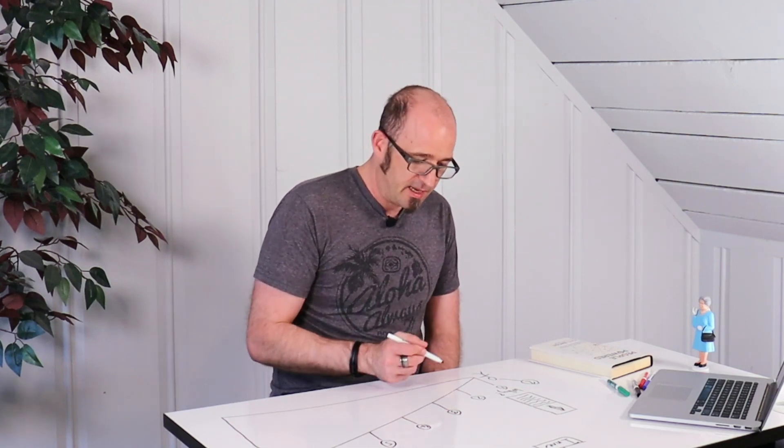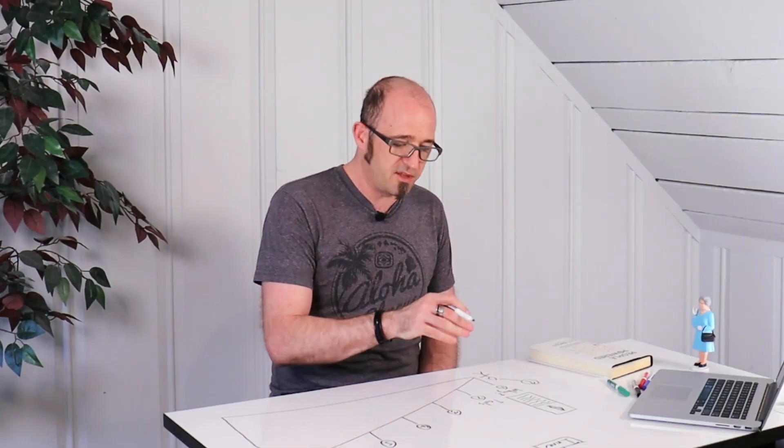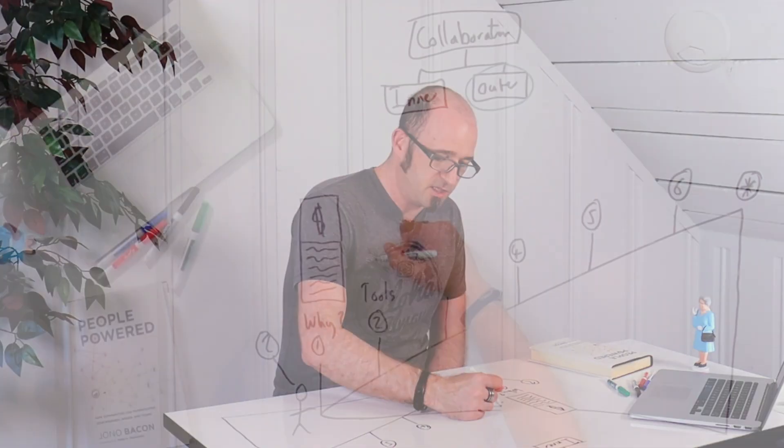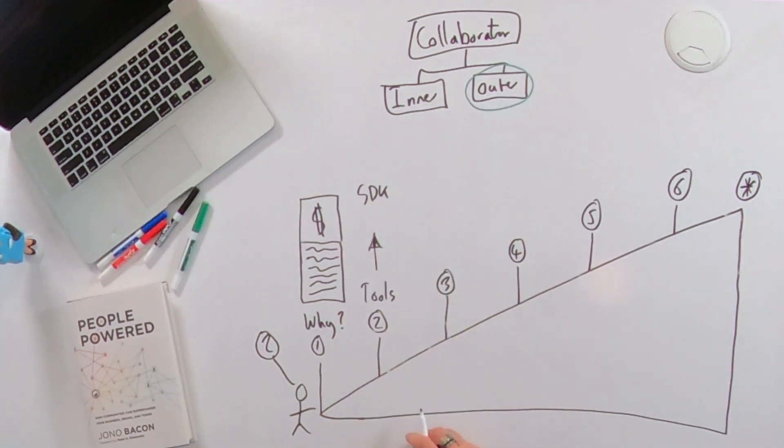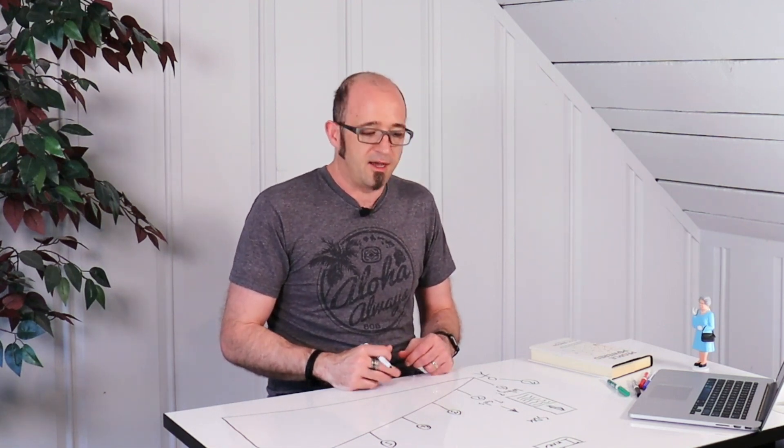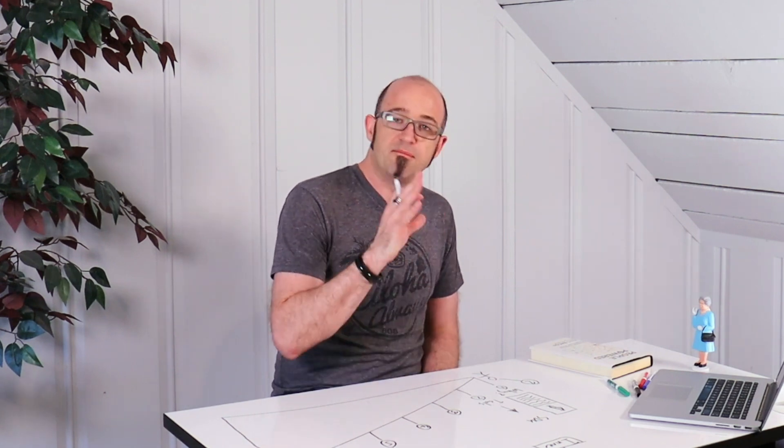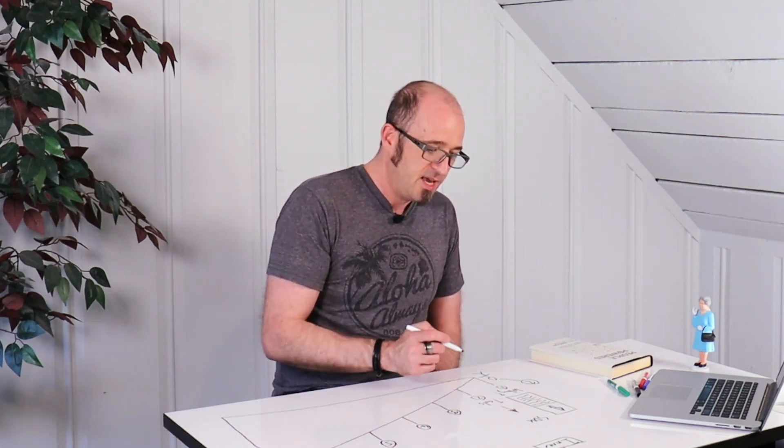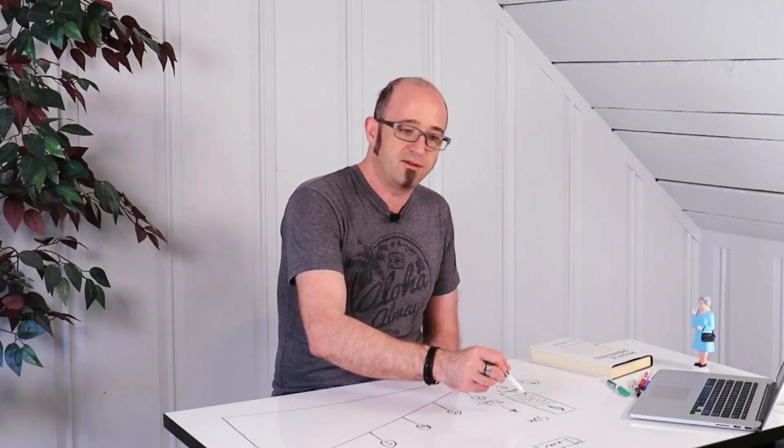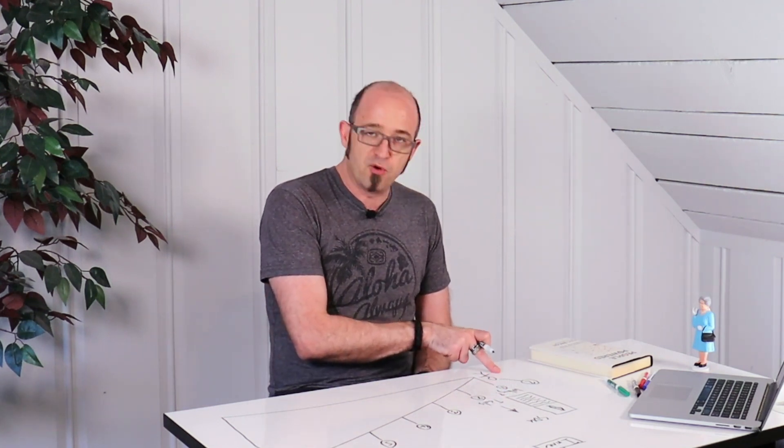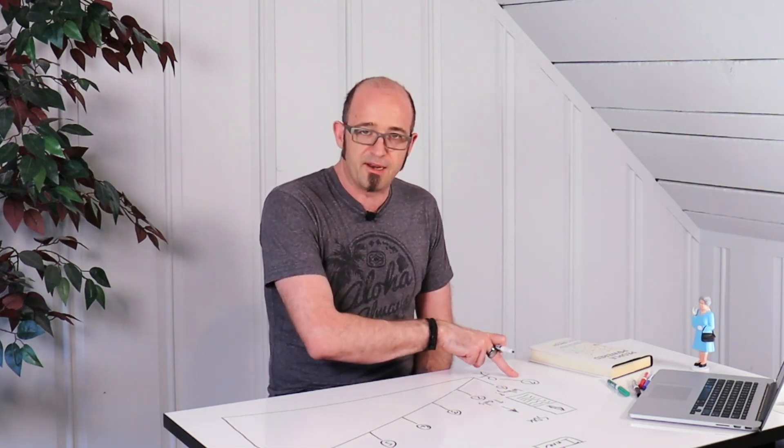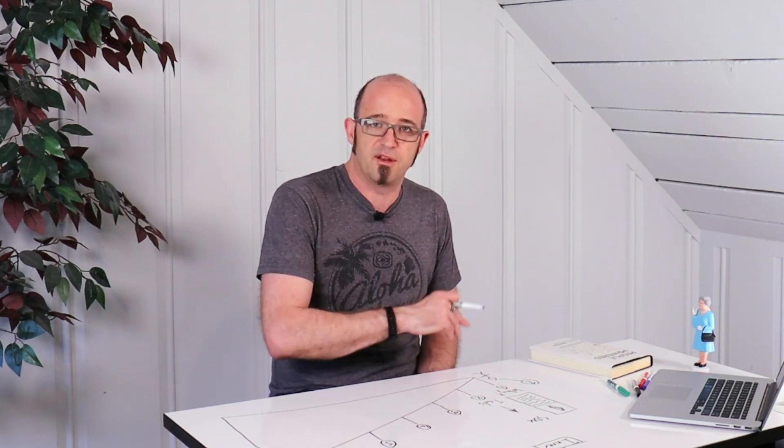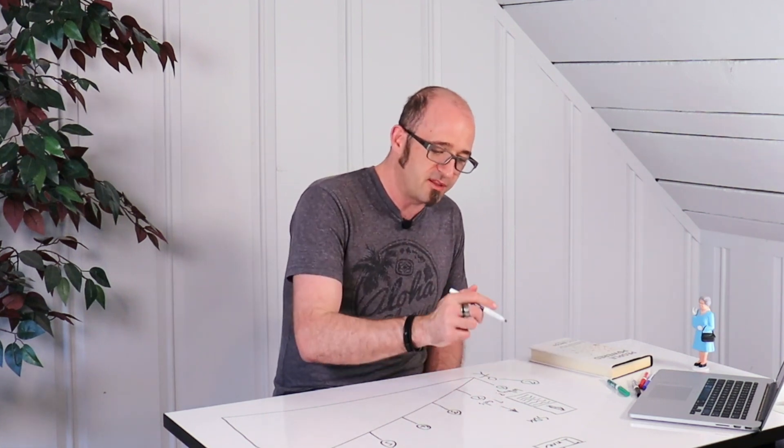Step two in the process is the tools. So what are the tools this developer is going to need to set up to get up and running? And most typically for an outer collaborative community like this, it's going to be an SDK. So this is going to be the core software development kit that they download and they've got full access to. So make sure that's really simple for them to go and grab.